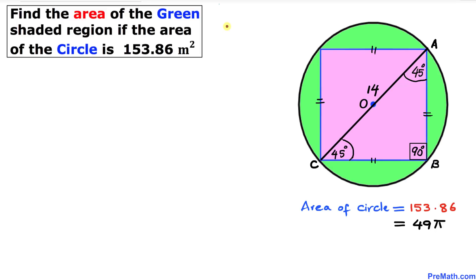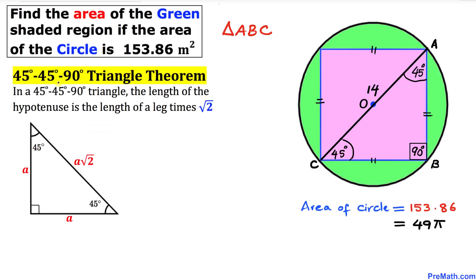Let's focus on triangle ABC and recall the 45-45-90 degree triangle theorem: in a 45-45-90 triangle, the hypotenuse equals a leg times the square root of 2. If the two legs are each length A, then the hypotenuse is A times square root of 2. In triangle ABC, both legs are A and the hypotenuse AC is A times square root of 2.